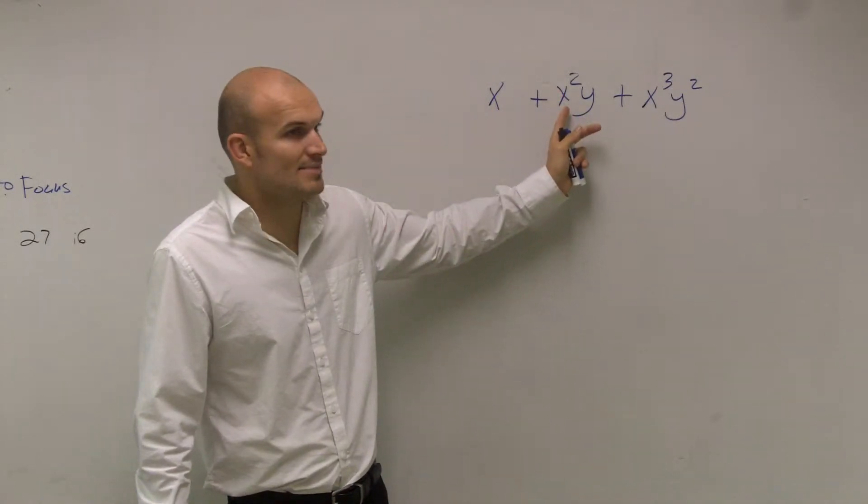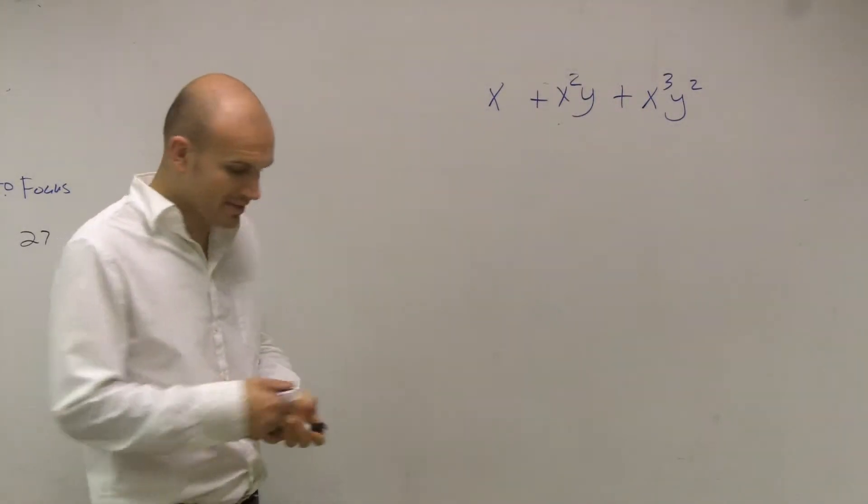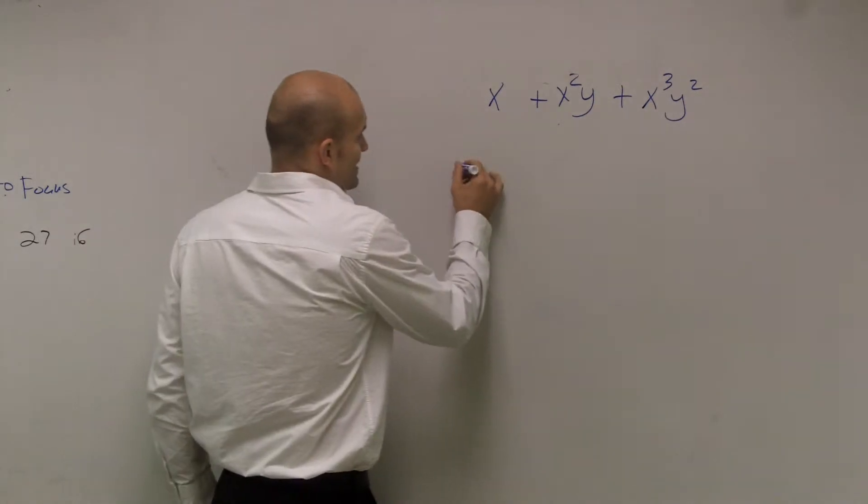So therefore, here's one x, here's x times x, and here's x times x times x. So yeah, I can factor out the x's. So what I'm going to do is I'm going to say, alright, I want to factor out the x.